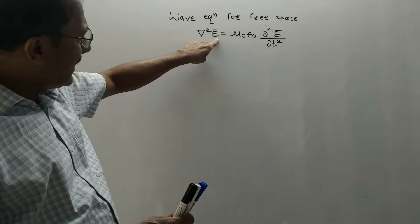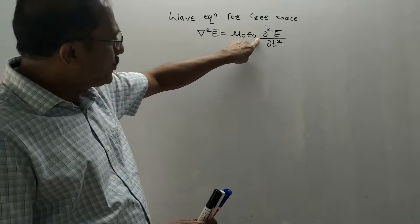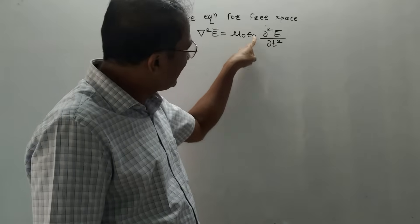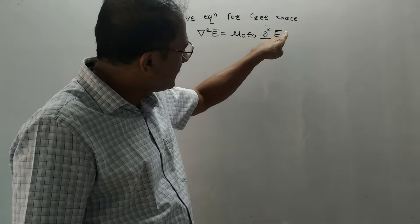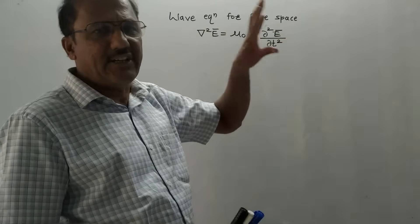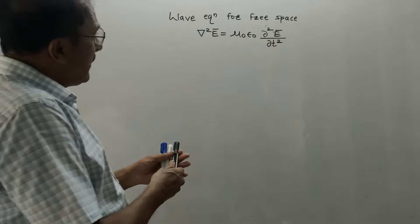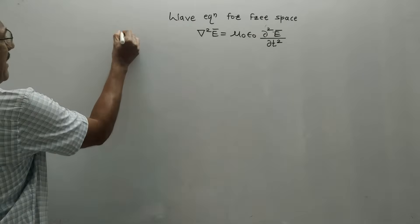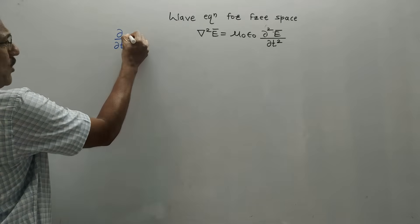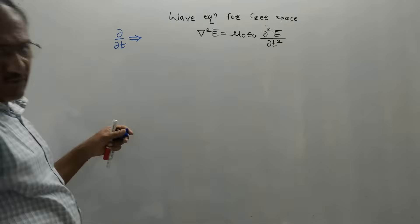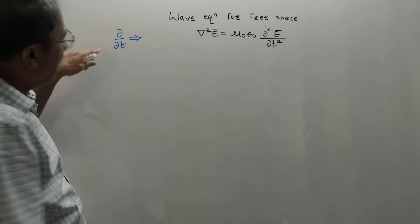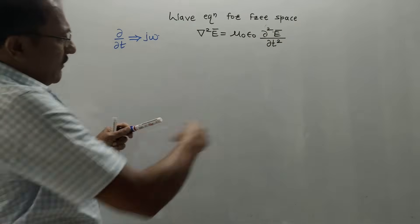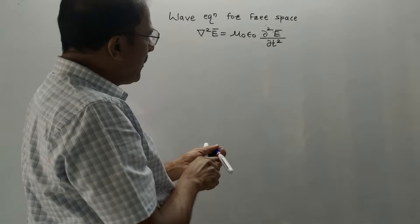The formula is: del squared E-bar equals μ₀ε₀ times ∂²E-bar/∂t², where μ₀ is the permeability of free space, ε₀ is the permittivity of free space, and E-bar is the electric field intensity. Now, in the case of harmonic variations, ∂/∂t is replaced by jω. So wherever ∂/∂t appears, I will be putting jω.